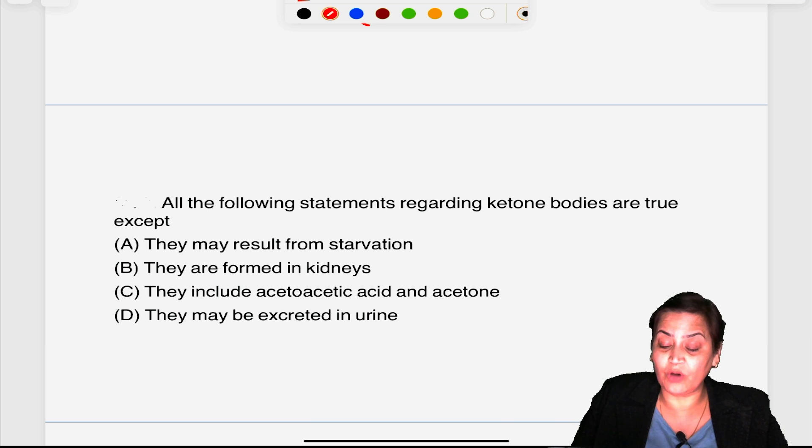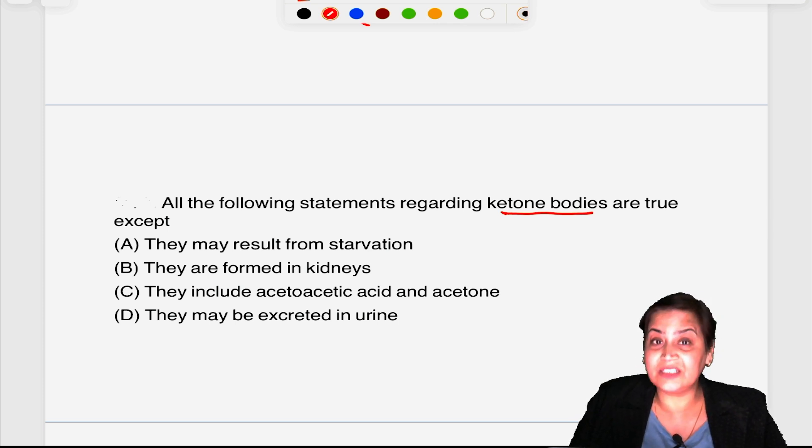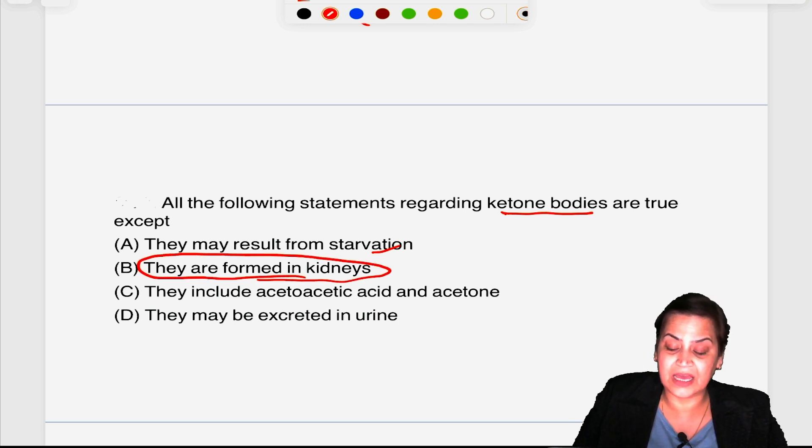All of the following statements regarding ketone bodies are true except? Again an FMGE question. Ketone bodies are acetone, acetoacetate, and beta hydroxybutyrate which increases during starvation and in diabetes mellitus. They may result - yes, they are increased in starvation. They are never formed in kidneys; they are produced in the liver. This is very important. They include acetoacetate and acetone, yes, and they may be excreted in urine. Whenever the concentration exceeds normal concentration of 1 milligram per dL, they can be excreted in urine in diabetes mellitus leading to ketonuria.